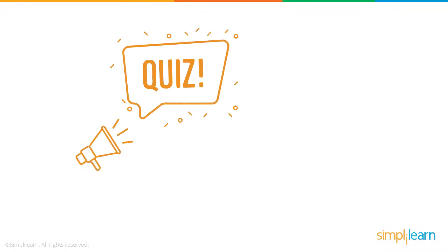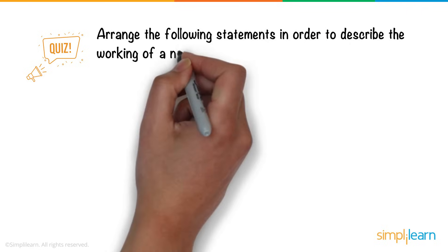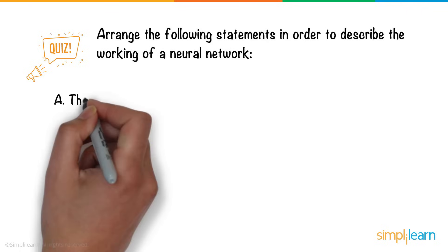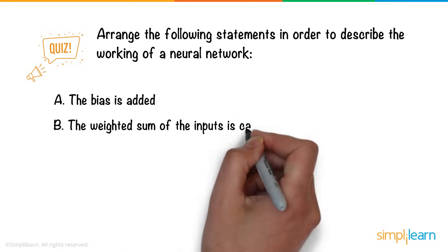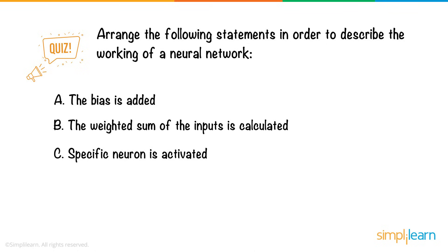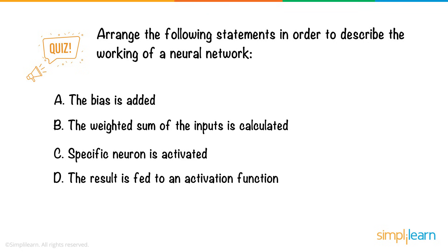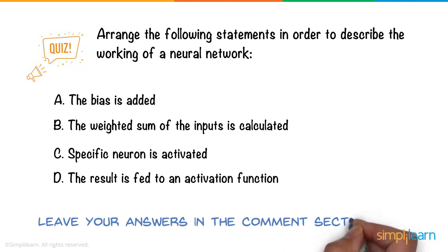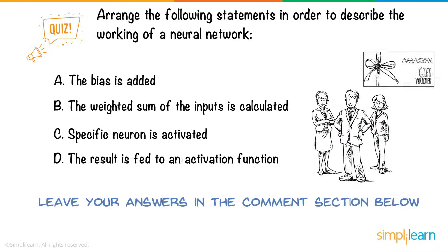So, here's a short quiz for you. Arrange the following statements in order to describe the working of a neural network. A. The bias is added. B. The weighted sum of the inputs is calculated. C. Specific neuron is activated. D. The result is fed to an activation function. Leave your answers in the comments section below. Three of you stand a chance to win Amazon vouchers. So hurry!